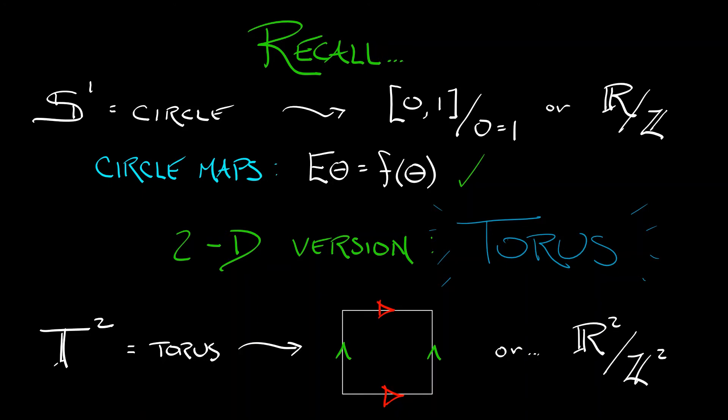What does that mean? Well, it means you're looking at the x-coordinate mod 1 and the y-coordinate mod 1. That's it. That's a simple way to think about a torus.